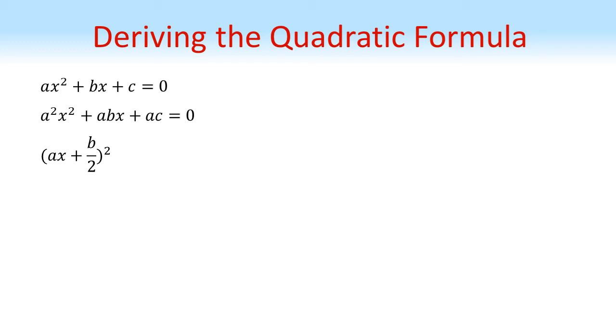Now if we were to expand that, we'd end up with b over two all squared as an extra term which we don't need, so we're going to take that away. That's equal to b squared over four. And let's not forget we've also got our plus ac equals zero from before that we haven't done anything with. So now we've got it to this form.